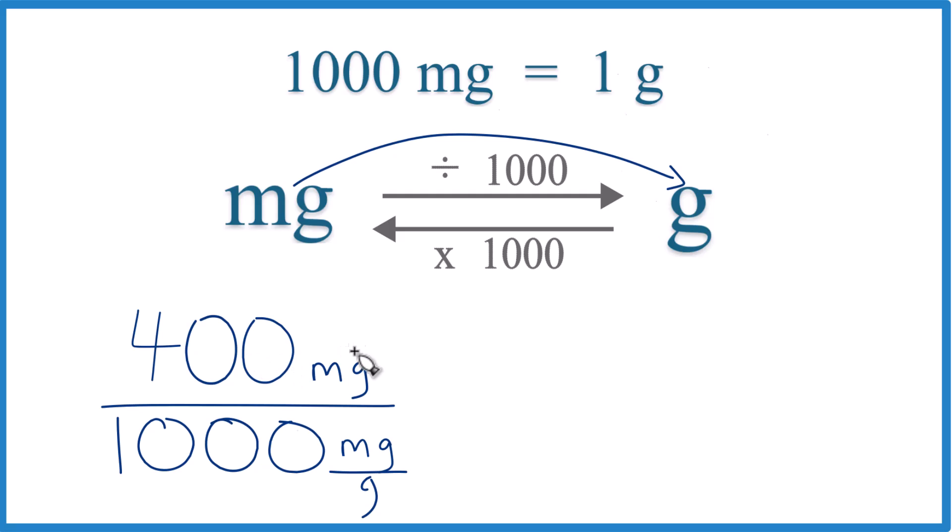But look at the units. 400 milligrams, that's what we start with, and then we divide by 1,000 milligrams per gram. This is our conversion factor, because this way we have milligrams on top here and here, they cancel out. We're going to be left with grams. That's what we're looking for.